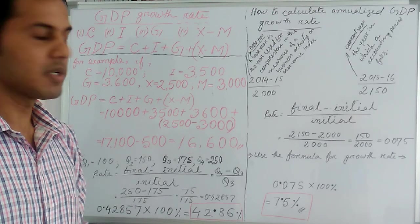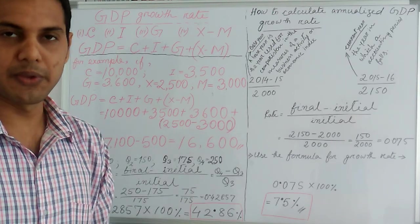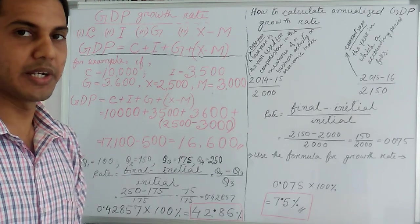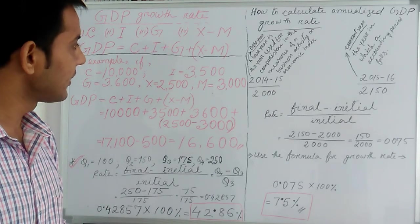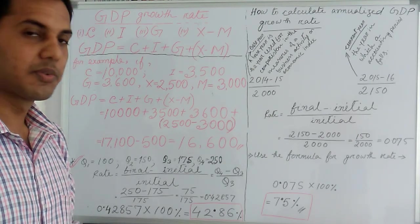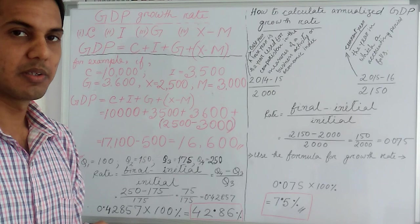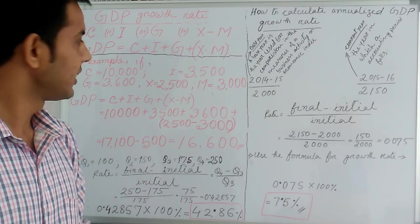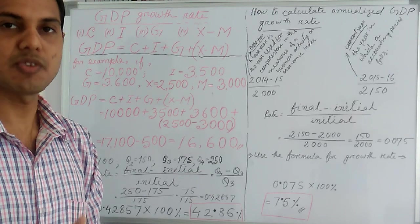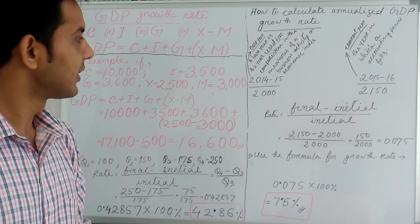Now suppose in a particular year, C equals 10,000, I equals 3,500, Z equals 3,600, X means export equals 2,500, M means import equals 3,000.